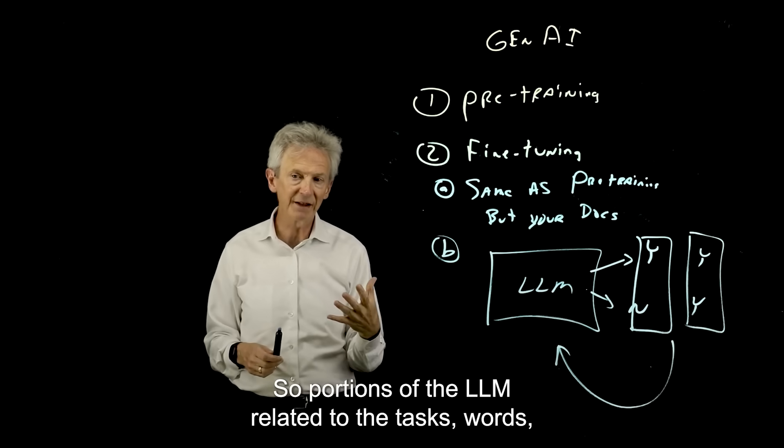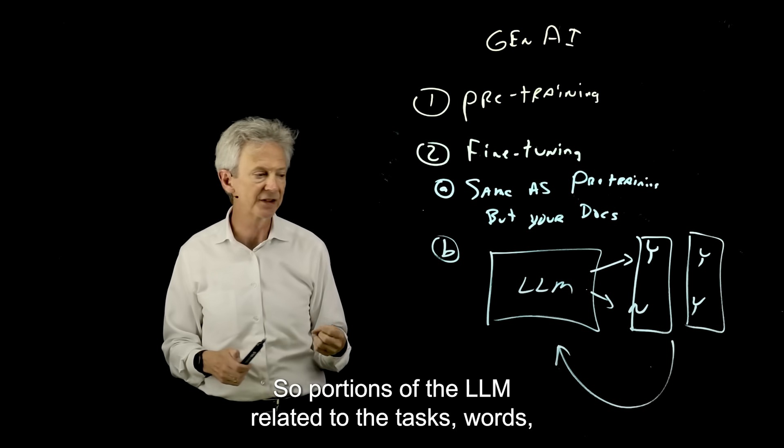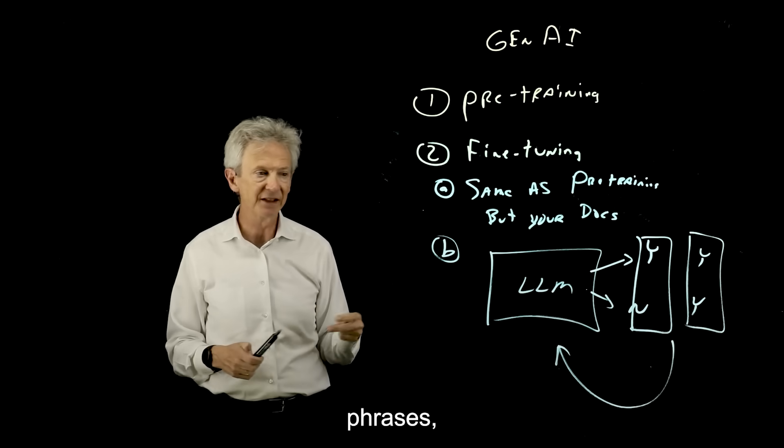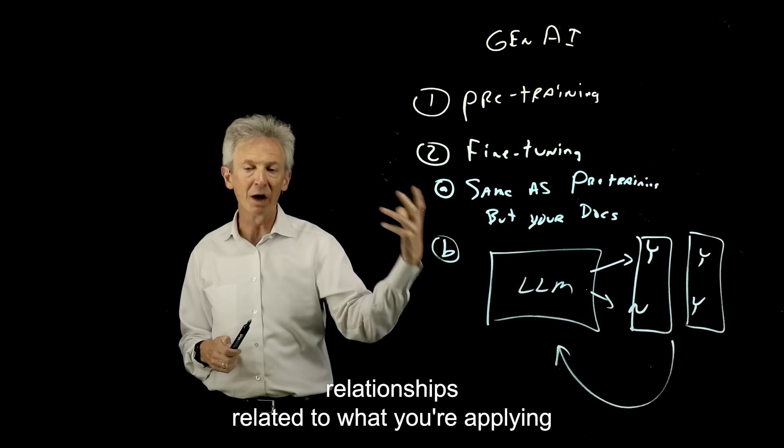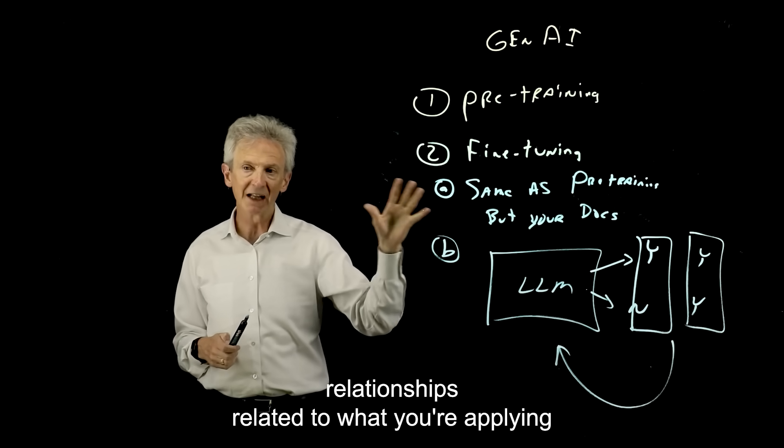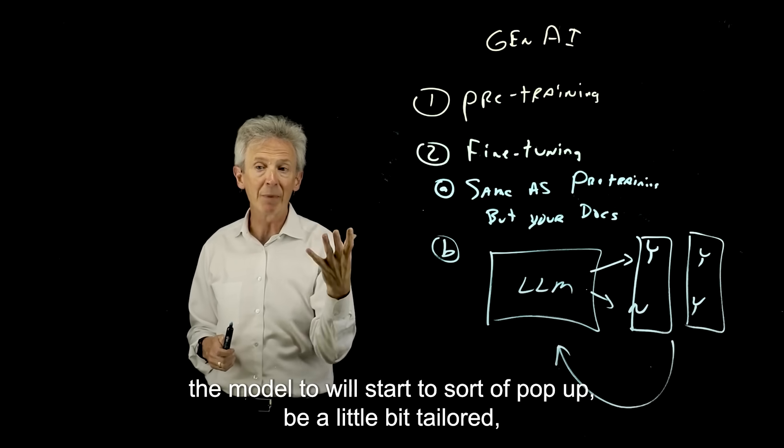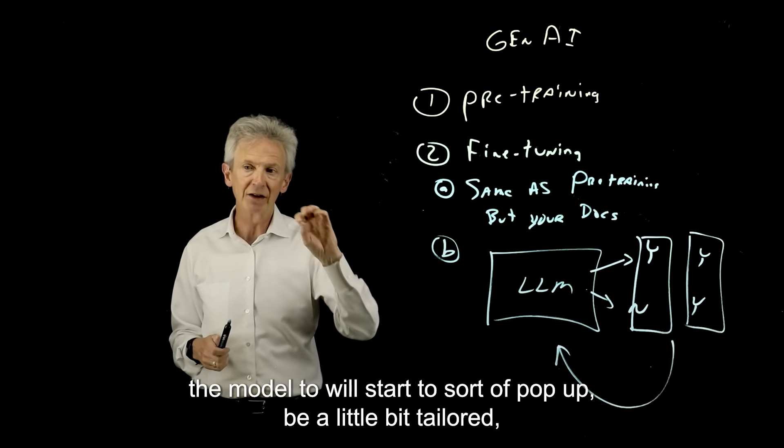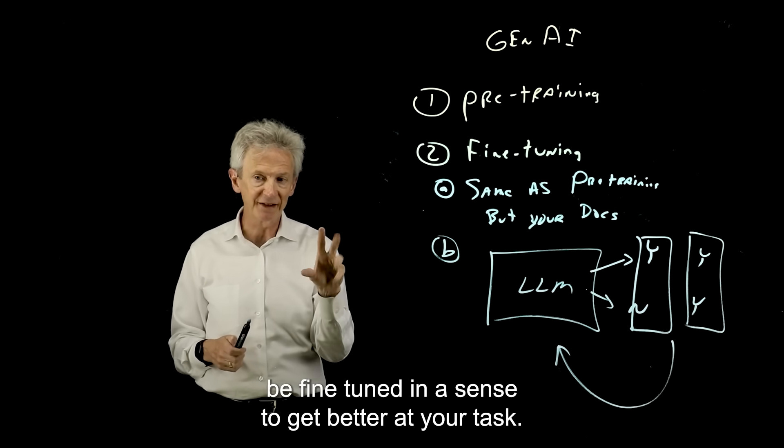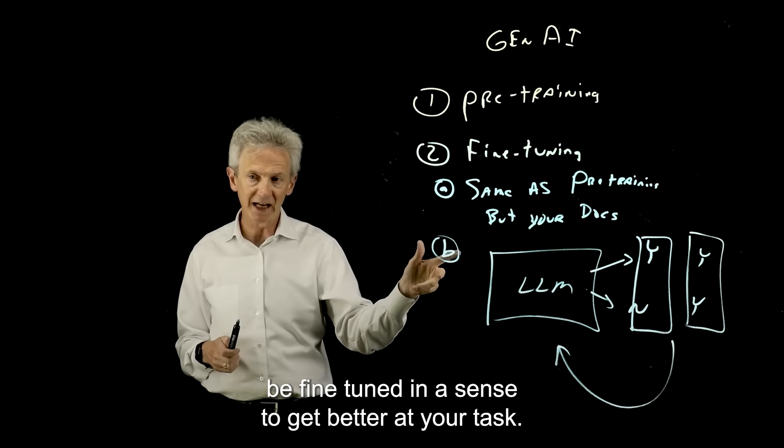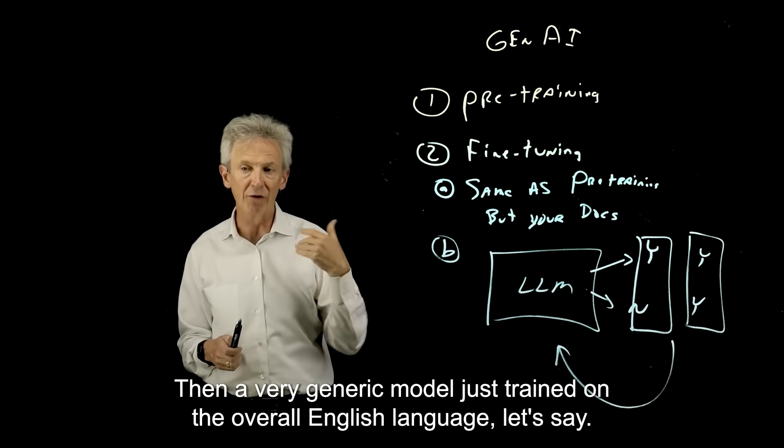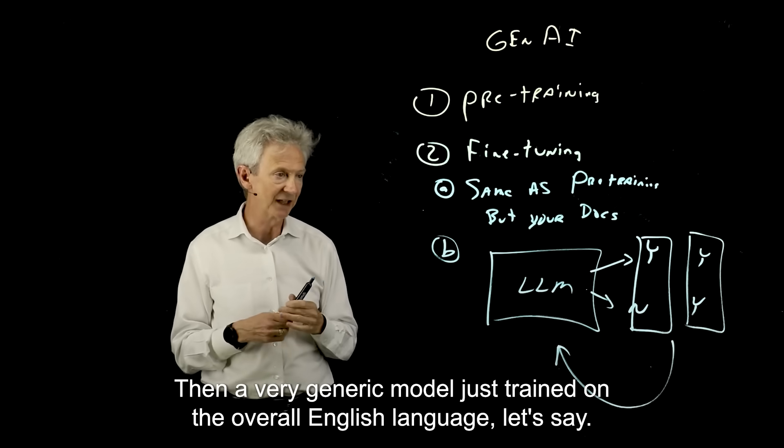So portions of the LLM related to the task—words, phrases, relationships related to what you're applying the model to—will start to sort of pop up, be a little bit tailored, be fine-tuned in a sense to get better at your task than a very generic model just trained on the overall English language, let's say.